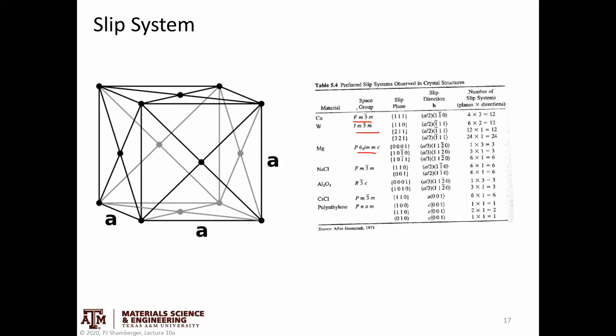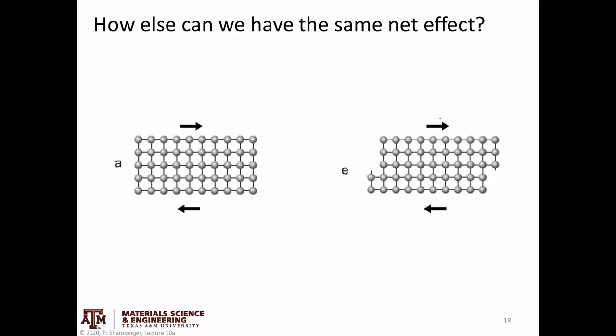What makes FCC metals so ductile is that they have many slip systems and that those slip systems intersect in the right ways, allowing dislocations to freely move through the lattice purely through slip — avoiding things like climb.